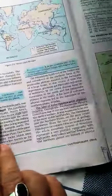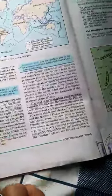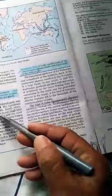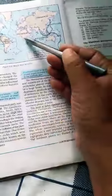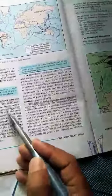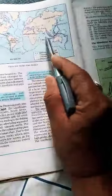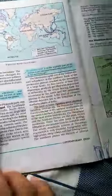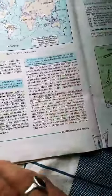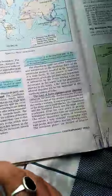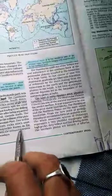The oldest landform is the peninsular part of India, which was part of Gondwana land. Gondwana land included India, Australia, South Africa, South America, and Antarctica together.